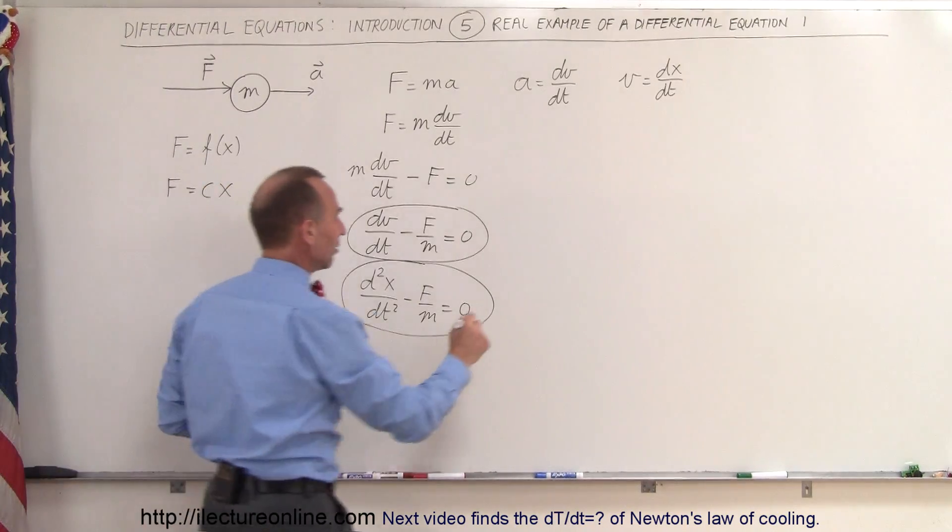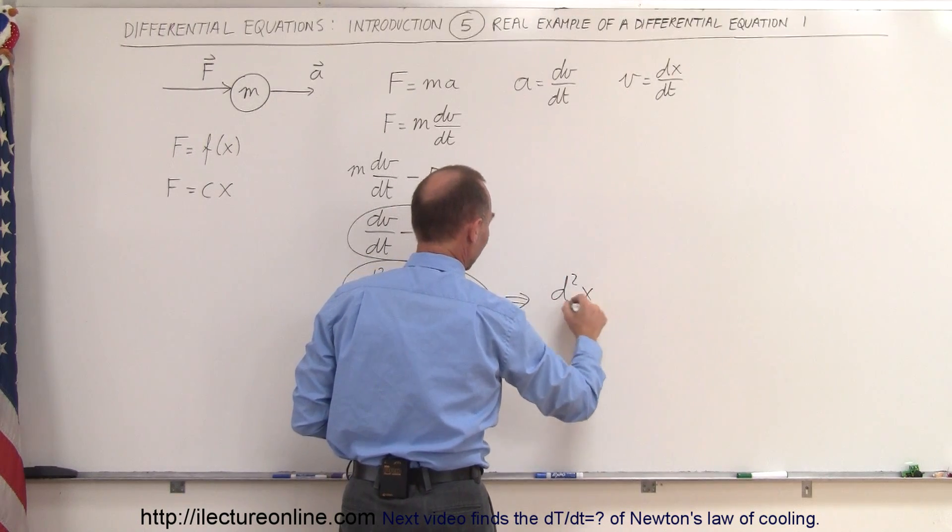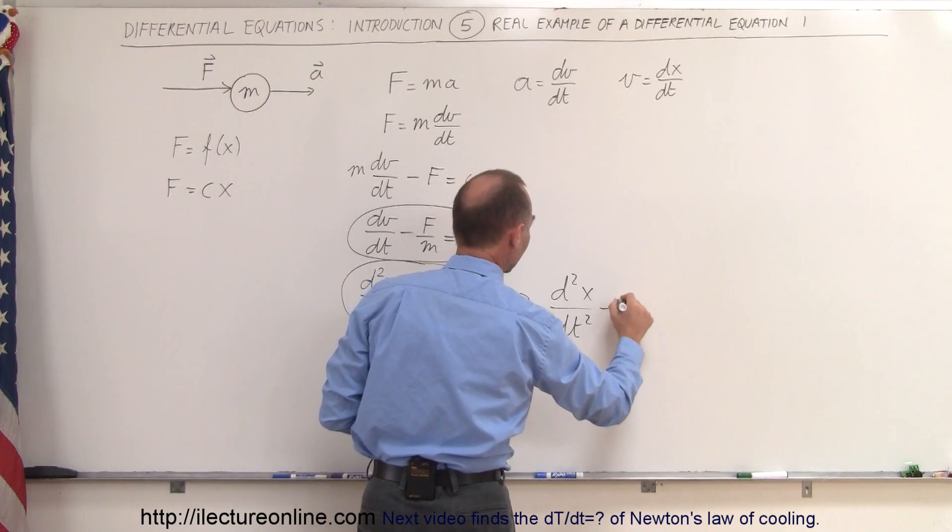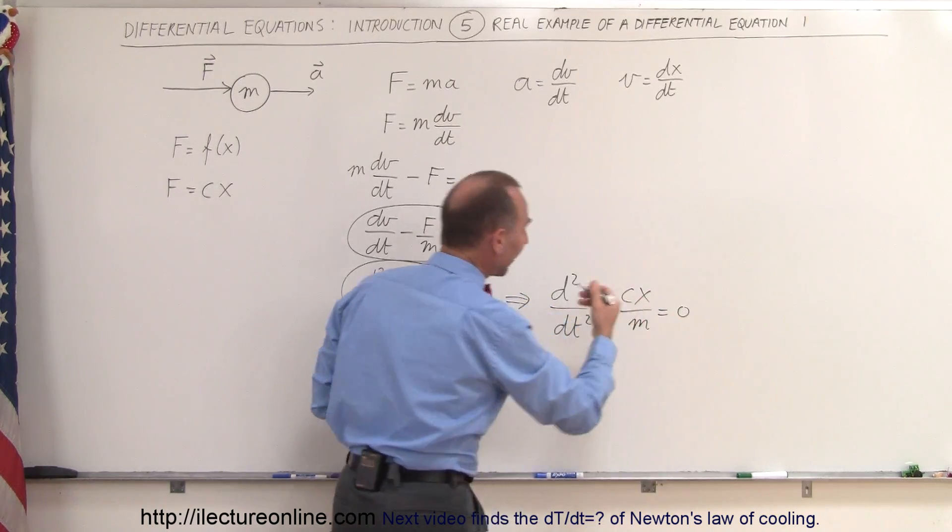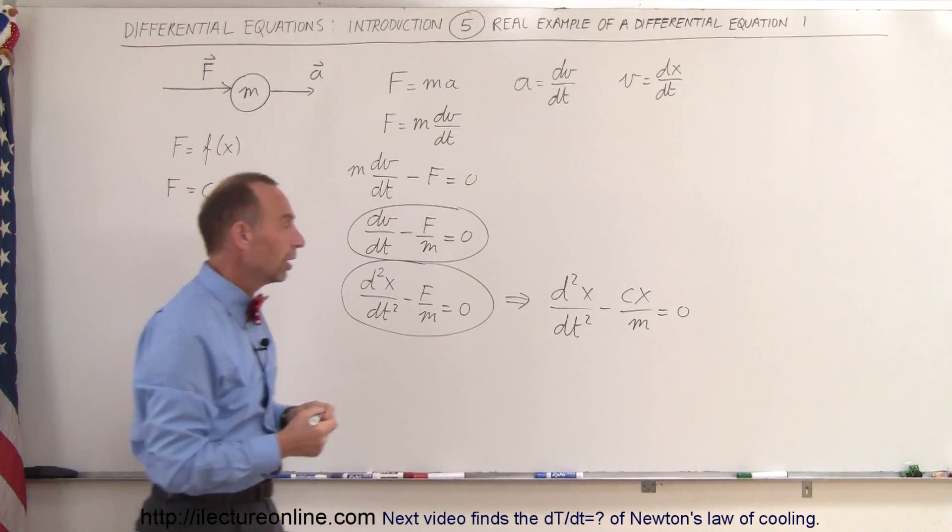And c would be the constant of proportionality. If we plug that in, then this equation now would become the second derivative with respect to time of x minus cx divided by m is equal to 0. And again, that would be a second-order differential equation for which we can try to solve for x.